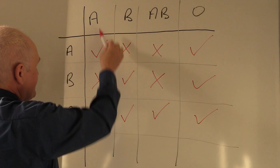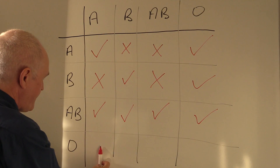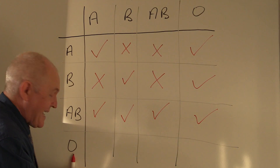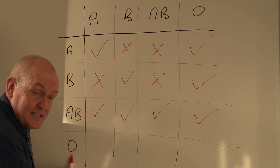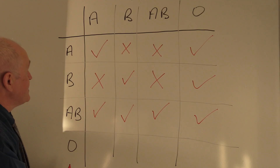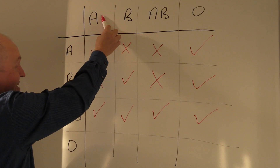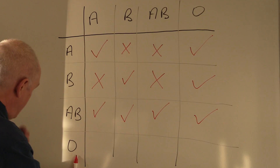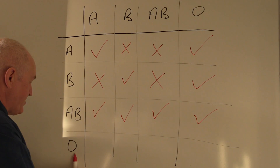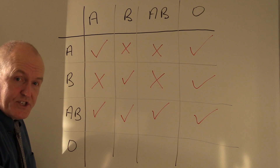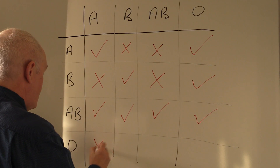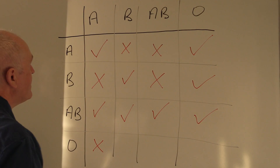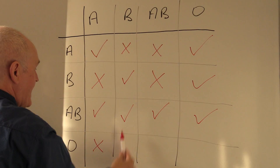Now, if A gives to O: in O blood there are going to be anti-A and anti-B antibodies. The A antigens will be agglutinated by the A antibodies in the group O recipient's plasma, so we can't have that.